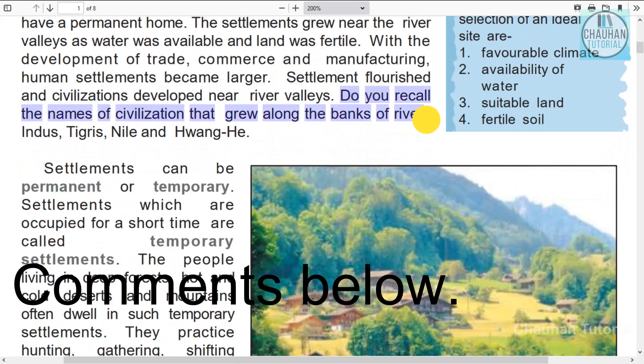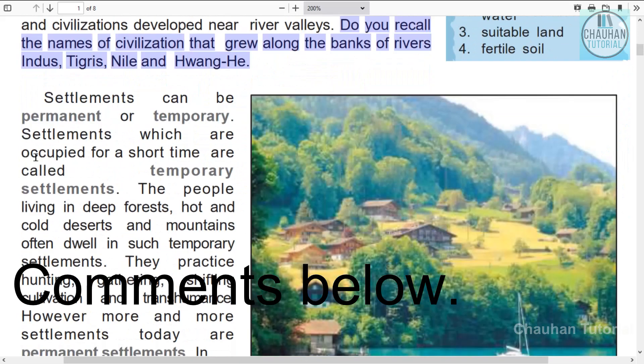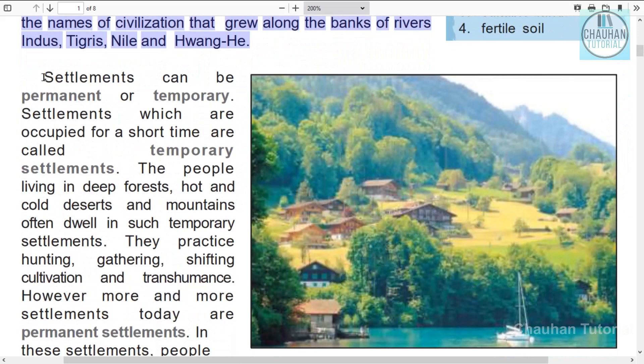Do you know the names of other civilizations? Civilizations developed near the Indus, Tigris, Nile, and Hwang Ho rivers. Settlements can be permanent or temporary.